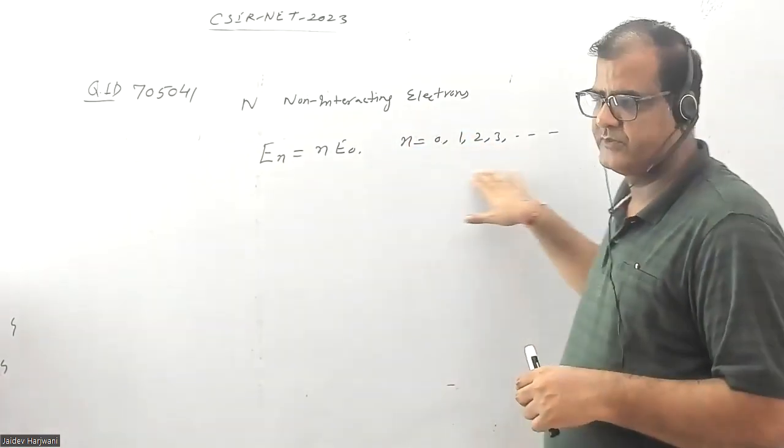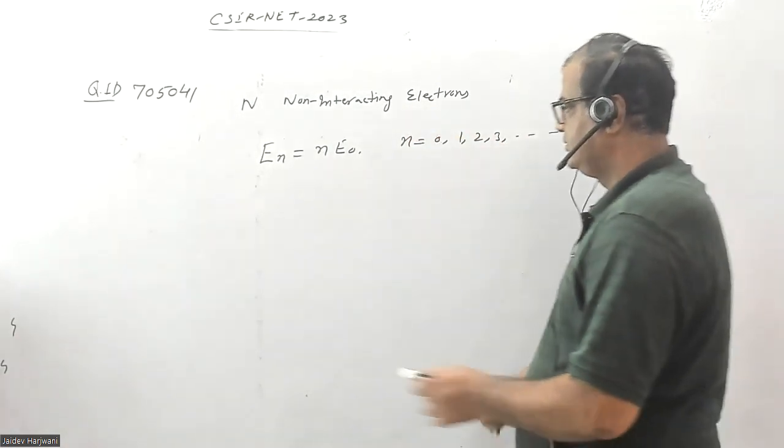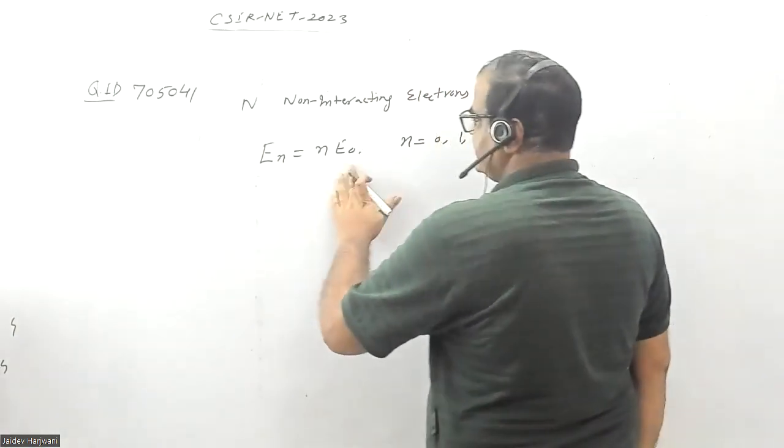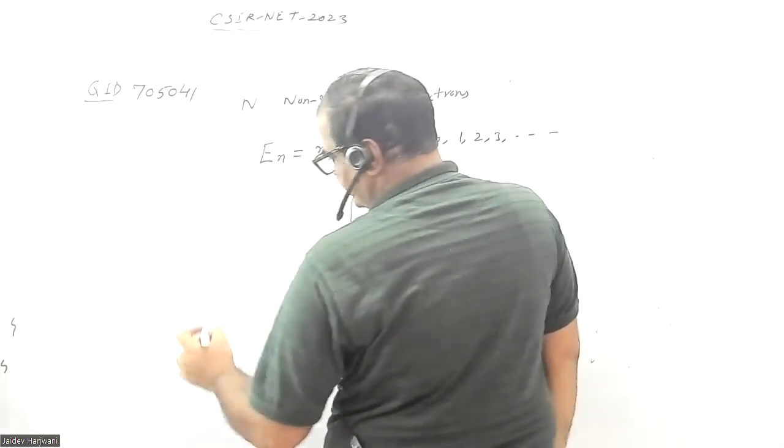Let us first calculate the ground state energy of the system. Energy levels are given by this equation where n varies from 0, 1, 2, 3, and so on. These are my levels.